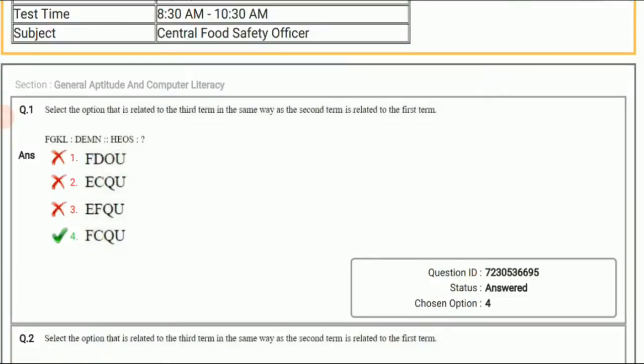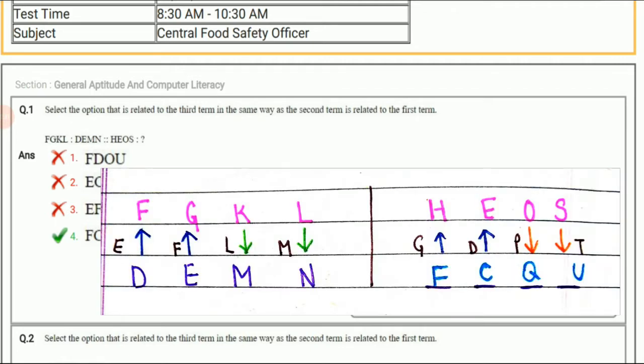Question number 1: Select the option that is related to the third term in the same way as the second term is related to the first term. Let's see the relationship between the first term and the second term. On your screen you can see that for the first two letters we have to start from the second term and for the last two letters we have to start from the first term.